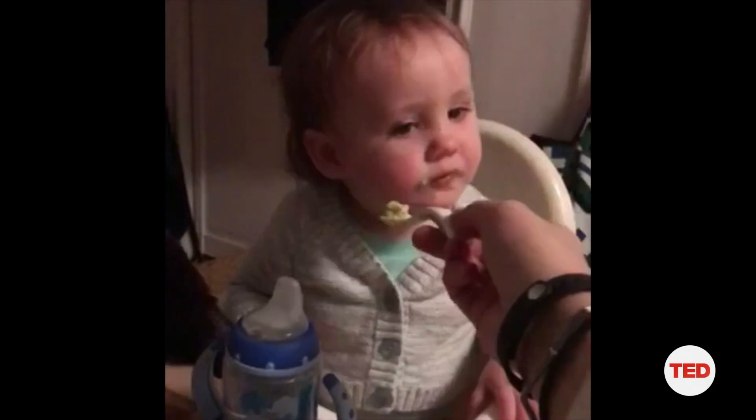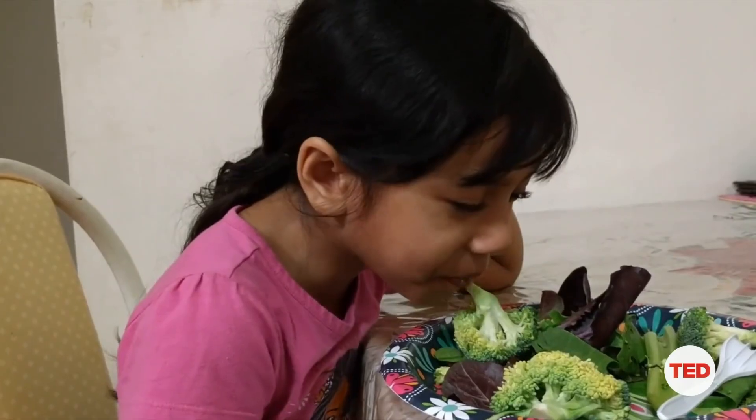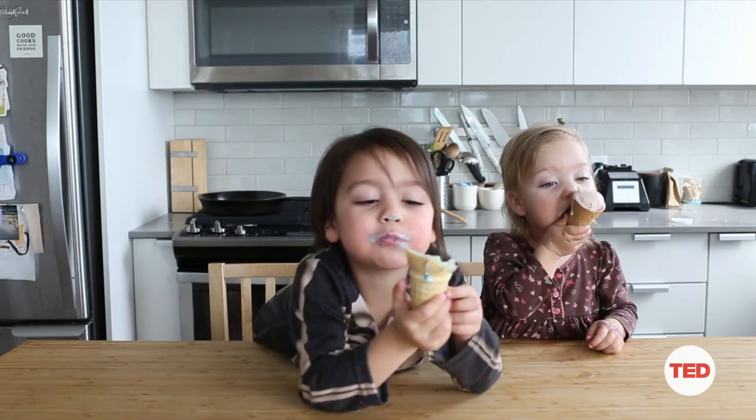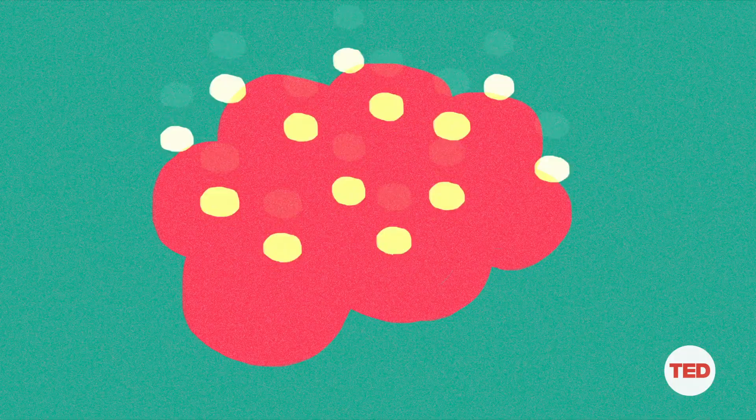It's an age-old pursuit of all parents, getting their kids to eat their vegetables. But getting them to eat cookies or ice cream is relatively easy. And that's because our brains prefer sweetness.